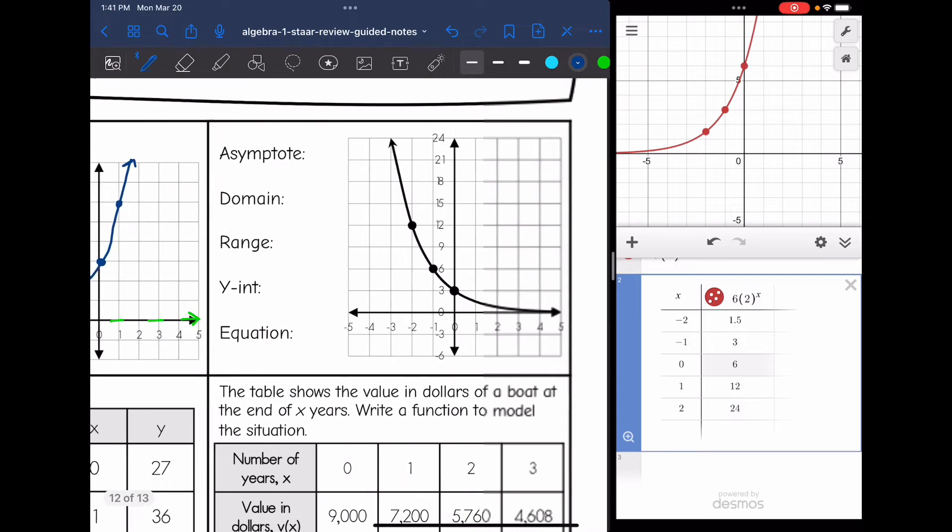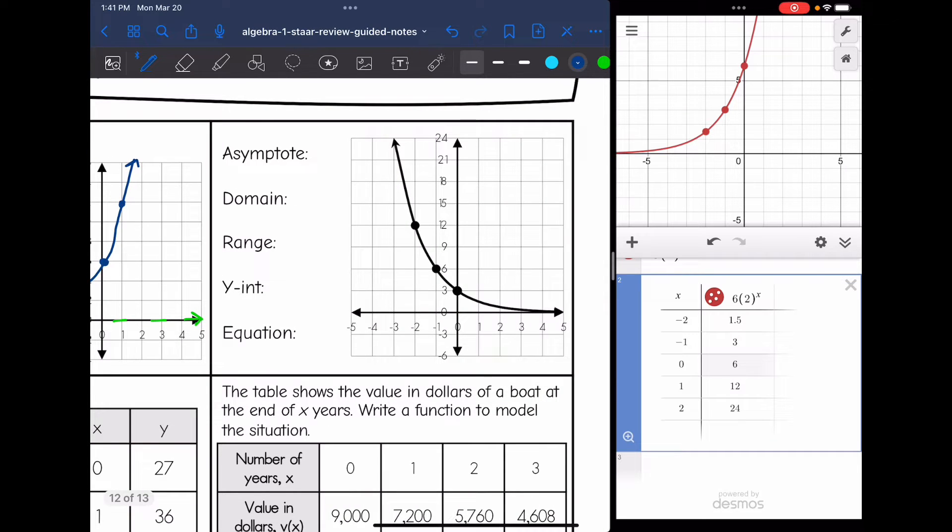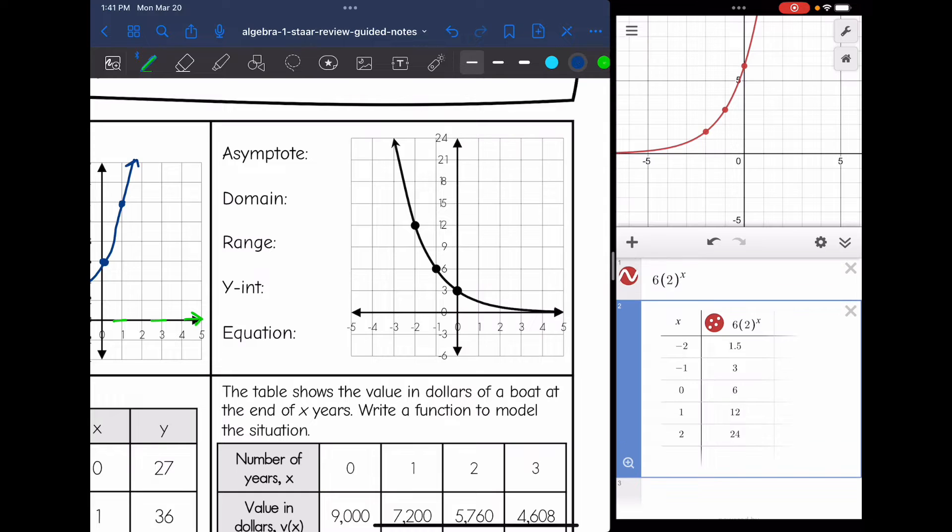Okay, on this next one, they gave us a graph. They want us to find these key features of it. So it looks like the asymptote is the same as the last one. We are approaching the x-axis, which is y = 0. My domain is all real numbers since it's going left and right forever. And my range is y > 0 since we are approaching zero but never crossing it. And we're everything above zero. We're going up forever. My y-intercept here is three.